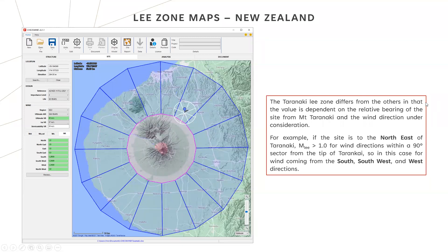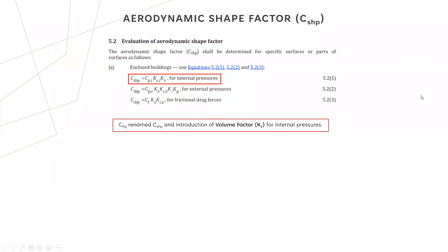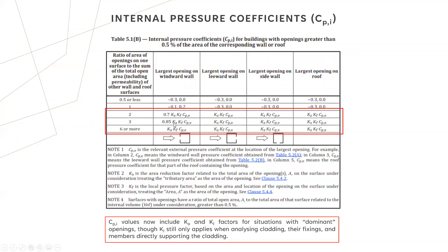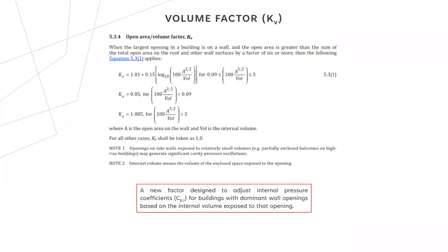The aerodynamic shape factor has been revised slightly. First, it's been renamed from C_fig to C_shape, and we've introduced the volume factor, which only affects internal pressures. The C_pi values now include K_A and K_L factors for situations with dominant openings, although K_L still only applies when analyzing cladding, their fixings, and members directly supporting the cladding. The volume factor is designed to adjust internal pressure coefficients for buildings with dominant wall openings based on the internal volume exposed to that opening — a very large volume means C_pi goes down a little, a very small volume means C_pi goes up.